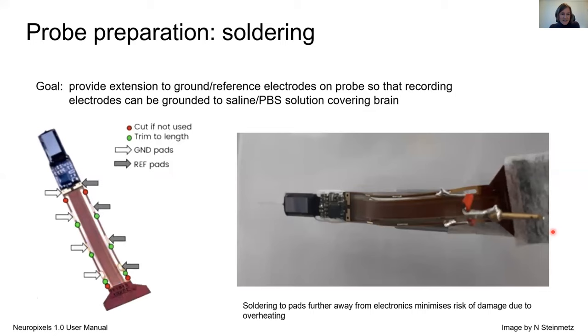Then the first thing you may want to do is some soldering. I think you've talked about how to ground the probe. There are several ways to do this, but we did it by soldering a wire to the reference and the ground. The point is you want to extend the ground and the reference electrode with a wire so you can ground your probe to the saline or PBS solution that covers the brain. It is most secure to use the soldering patches that are furthest away from the electronics because the heat could damage these electronics.